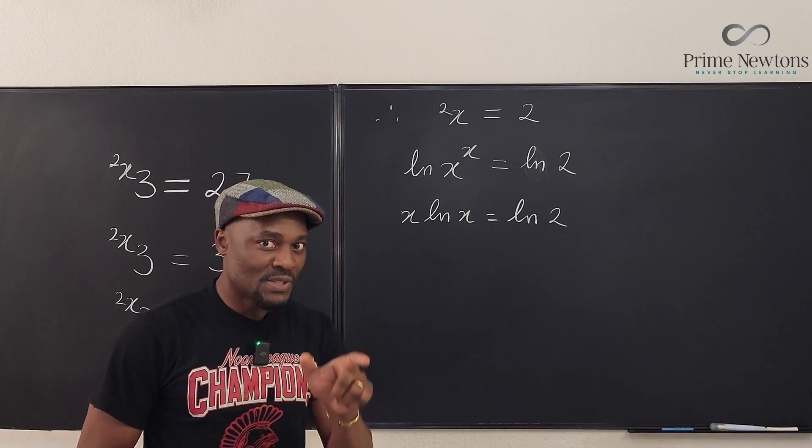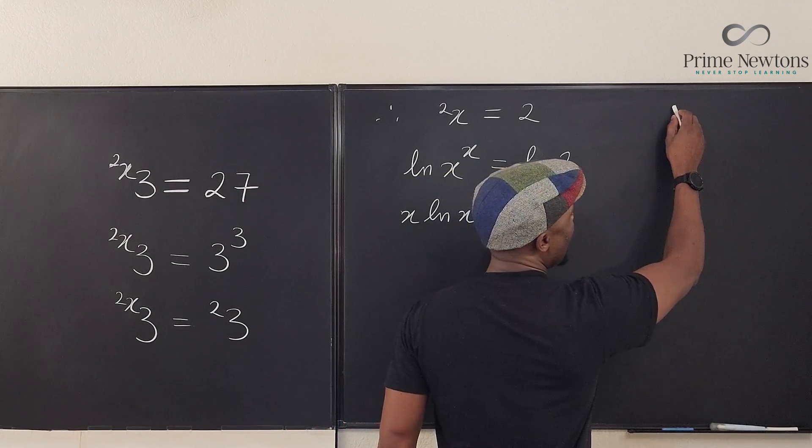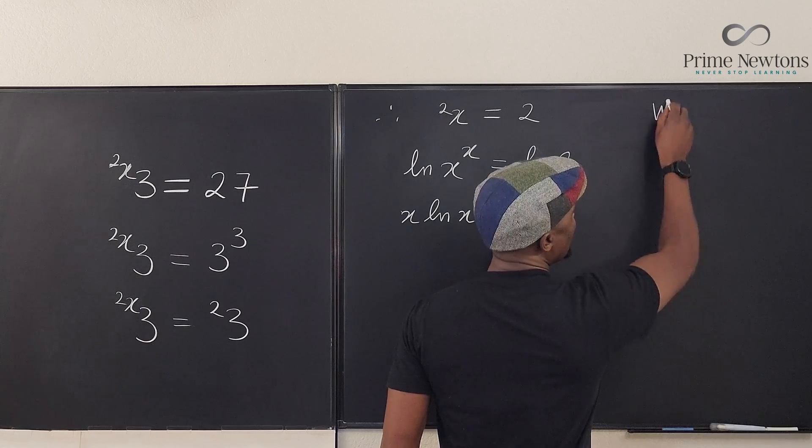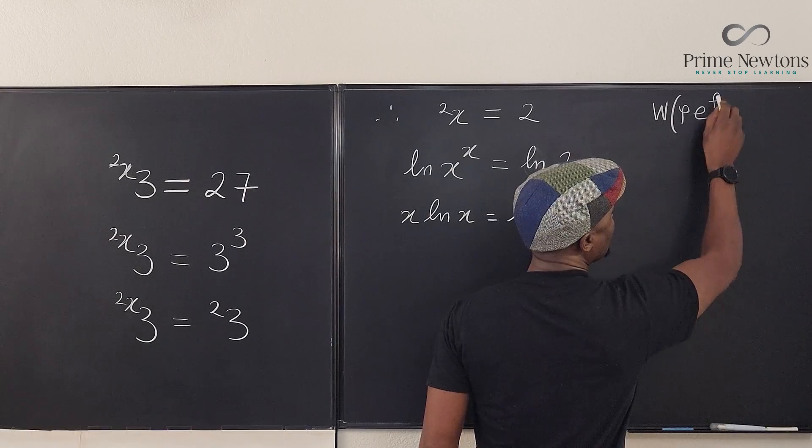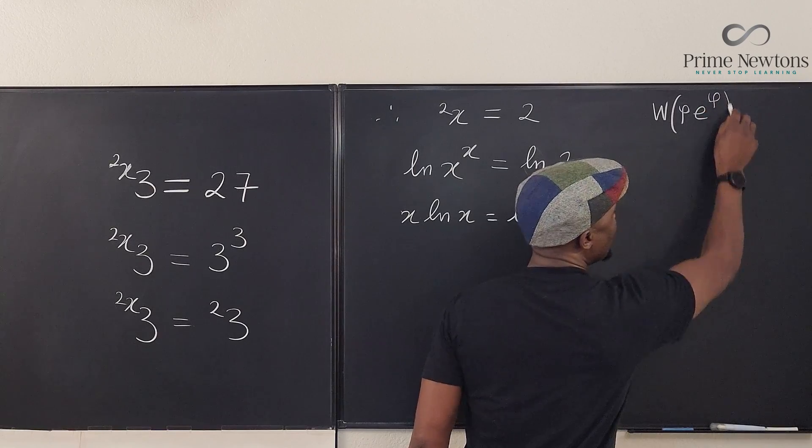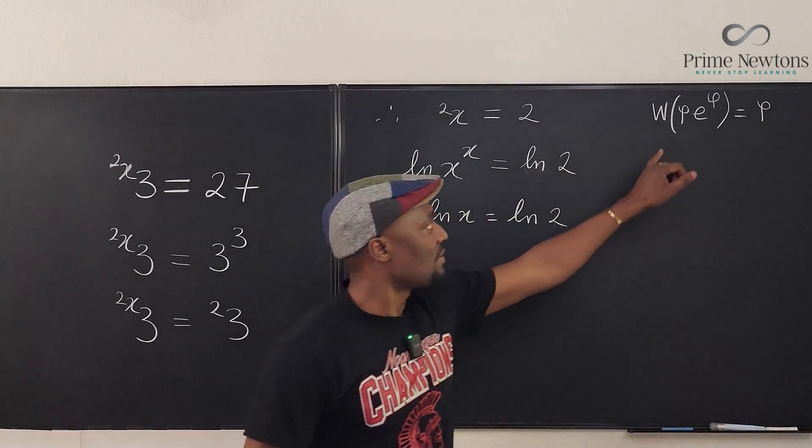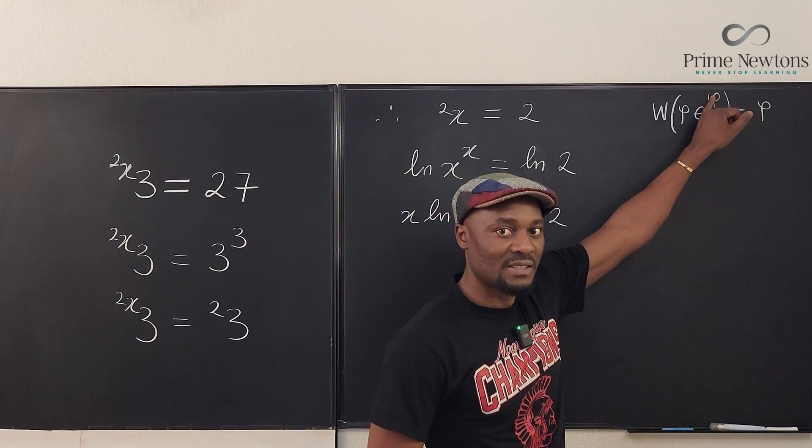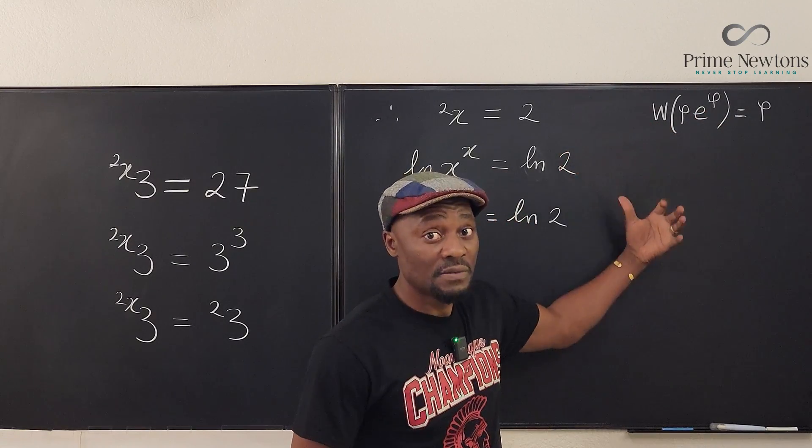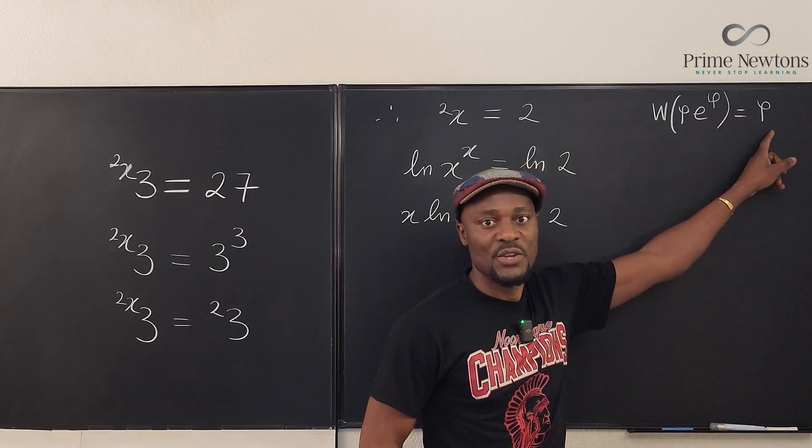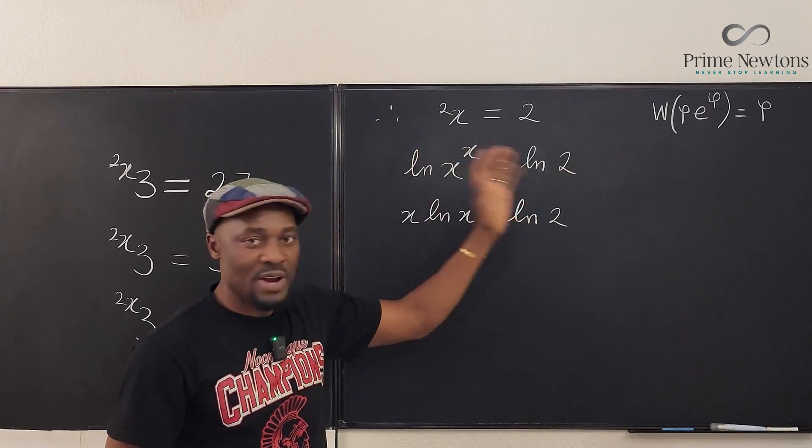Now, in order to be able to use the Lambert W function, remember that for Lambert W function, if you have a function like this, if you have something here, times e raised to power that same thing, and you plug it into your Lambert W function or the product log function, this is what you get. You get what was inside. You get it back. So that's where, so we want to try and write this in that format so we can get whatever is inside.